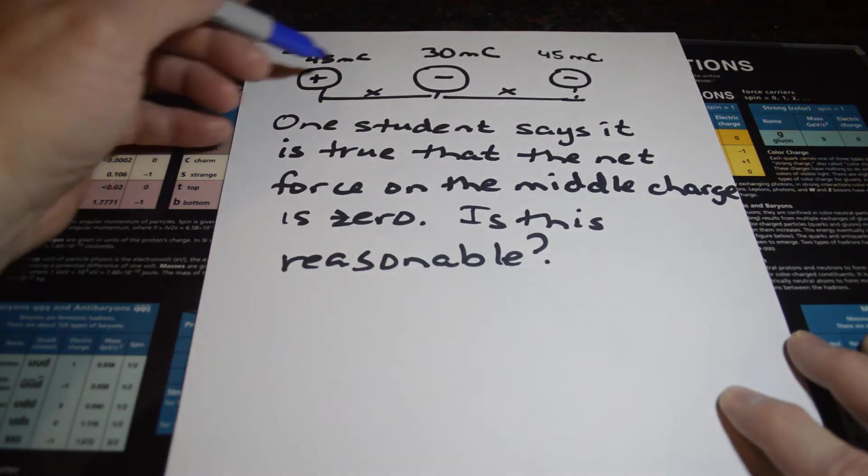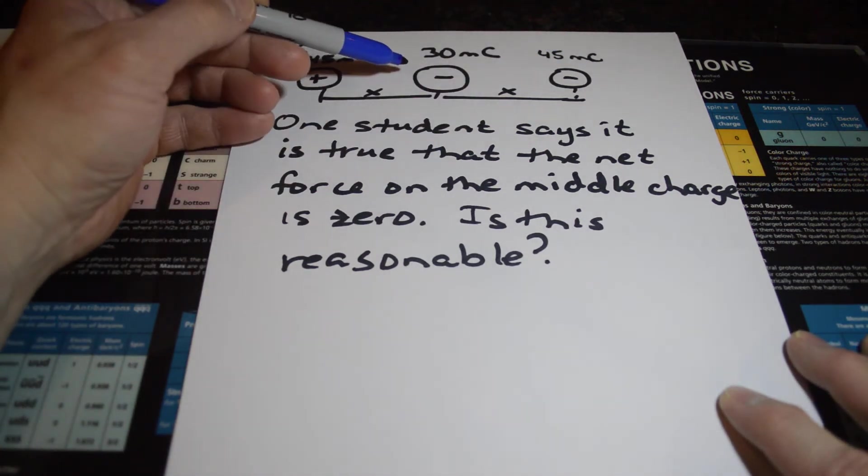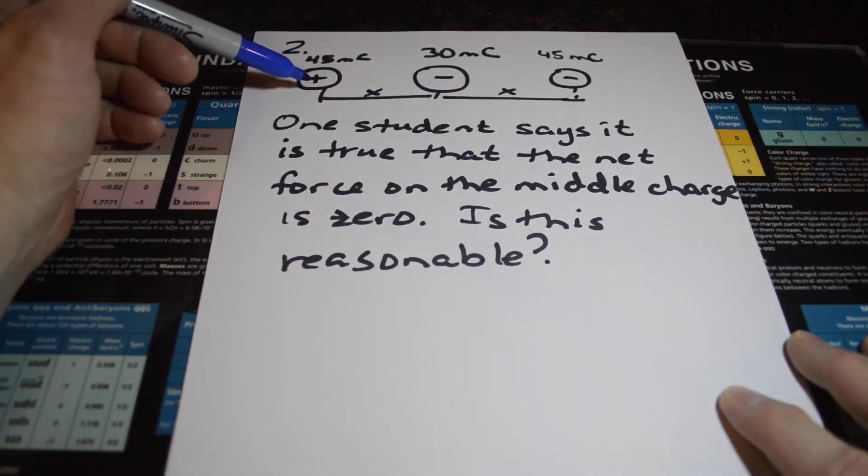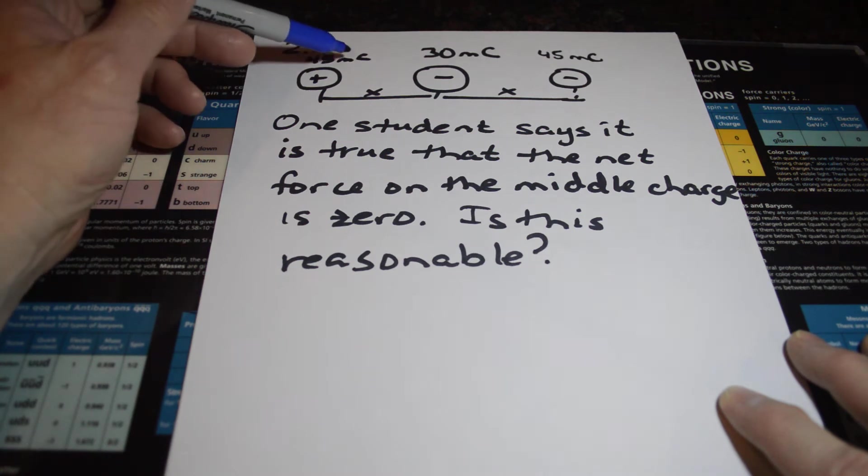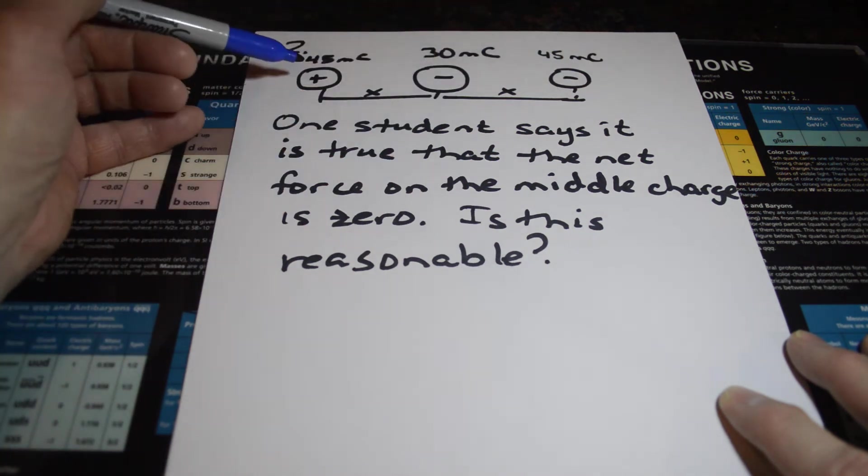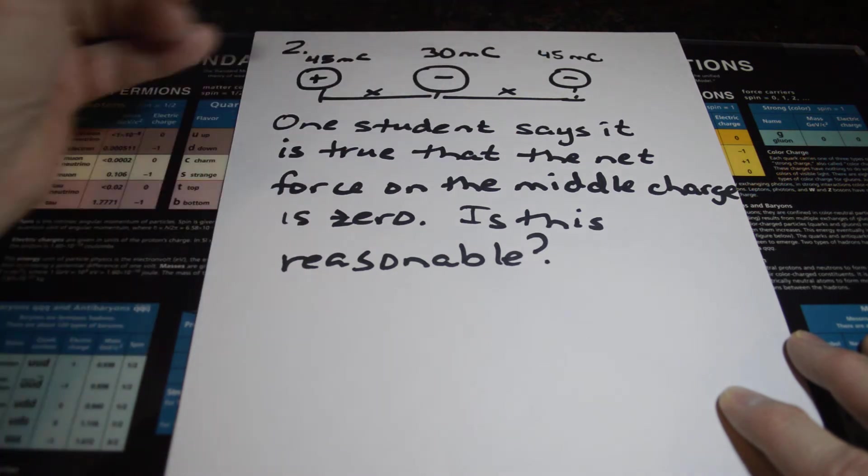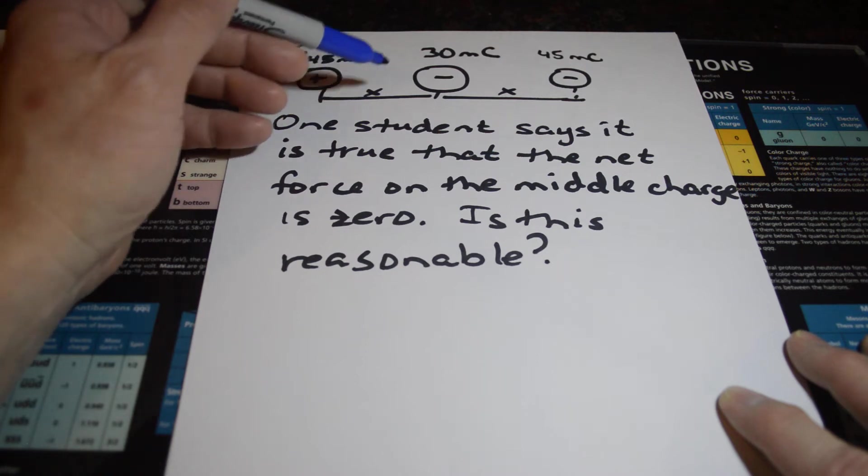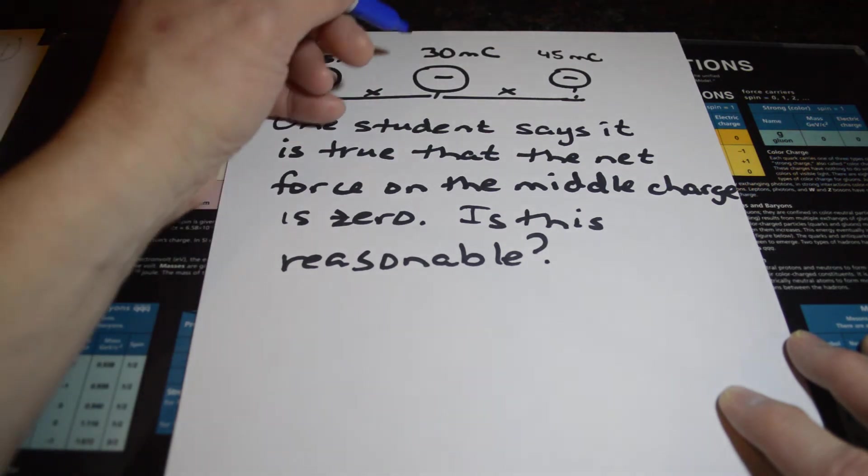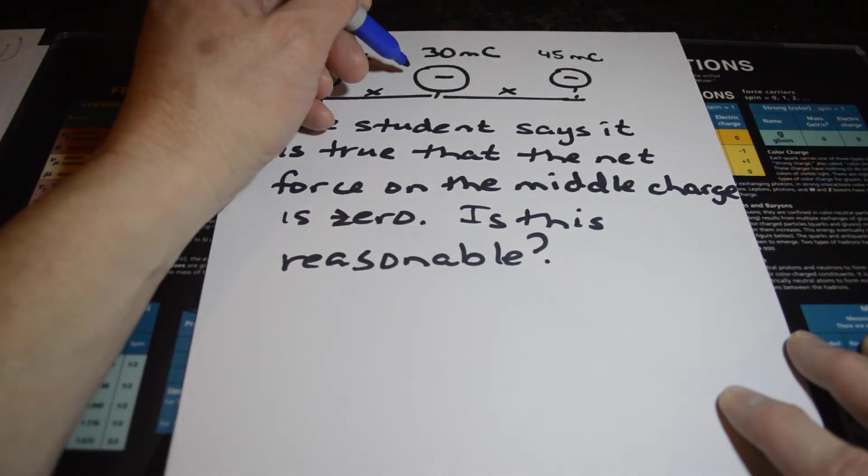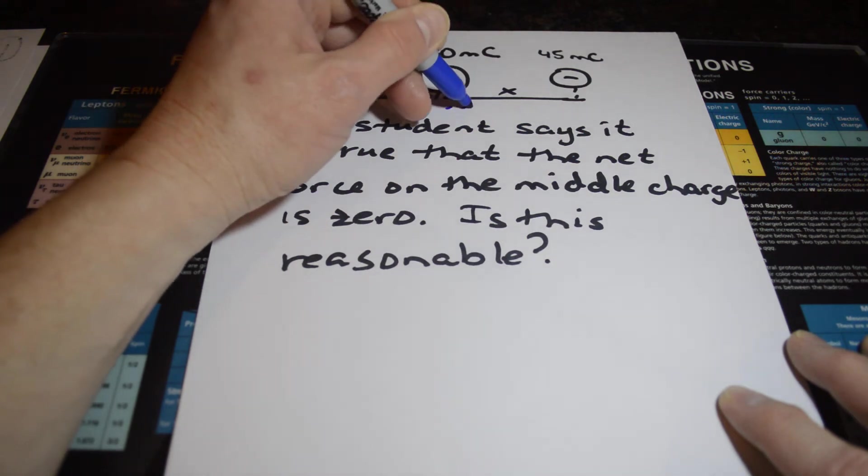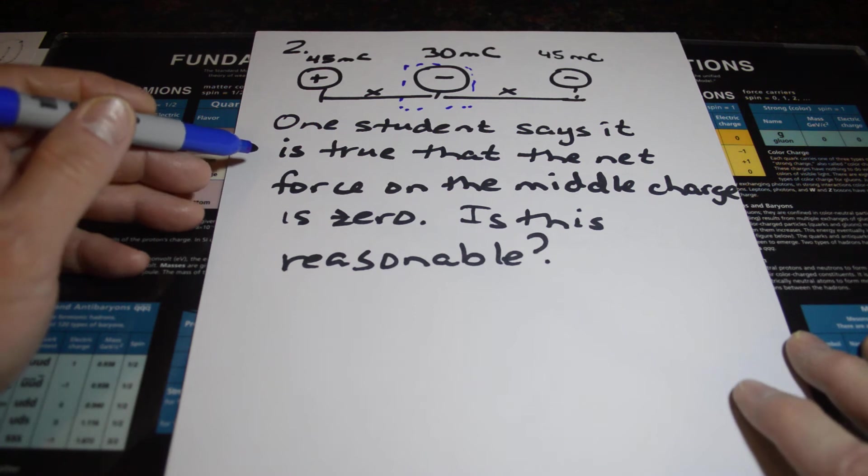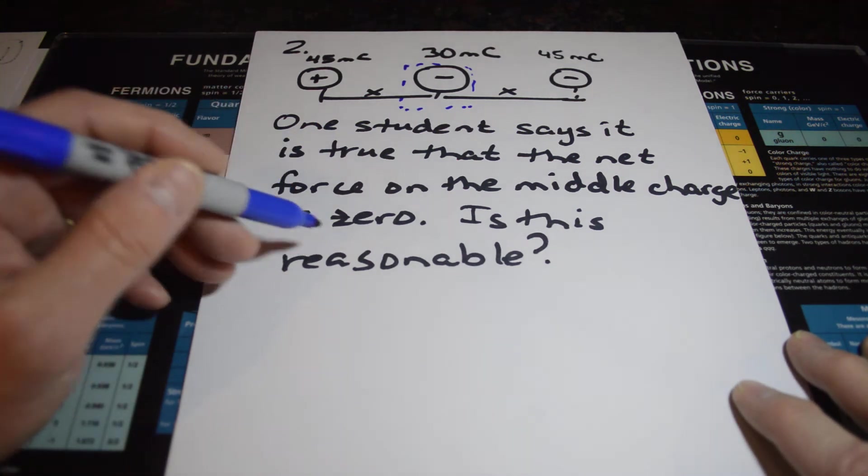Second question. You have three charges in a line. You have a negative charge in the middle, it says, of 30 millicoulombs. And then you have two charges of both 45 millicoulombs on each end, one being positive and the other being negative. Both sets of 45 millicoulombs are the same distance away from the middle charge. And you want to know something about what's happening with the charge in the middle. And one student says, it is true that the net force in the middle charge is zero.